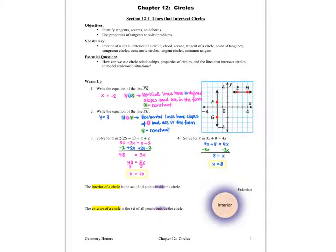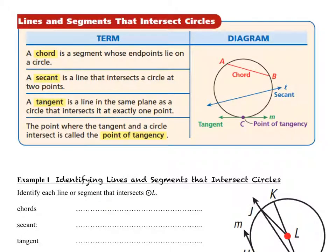Next, let's take a look at some definitions of lines and segments that intersect circles. A chord is a segment whose endpoints lie on the circle. A secant is a line that intersects a circle at two points, and you can see the secant line L. And then we have a tangent, which is a line that intersects the circle at exactly one point. And line M is an example of a tangent line.